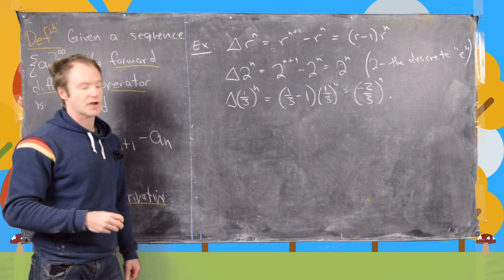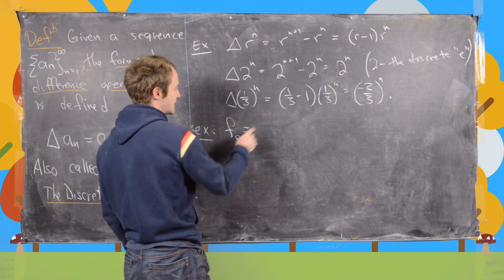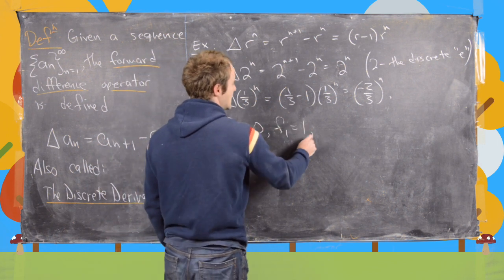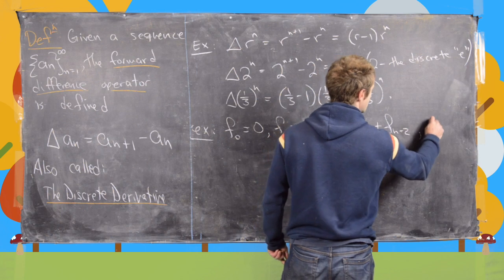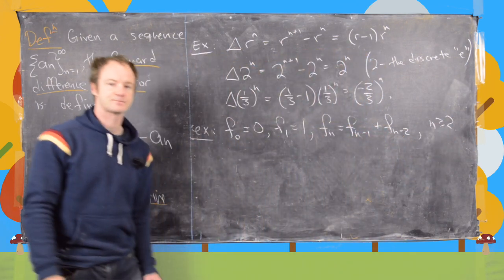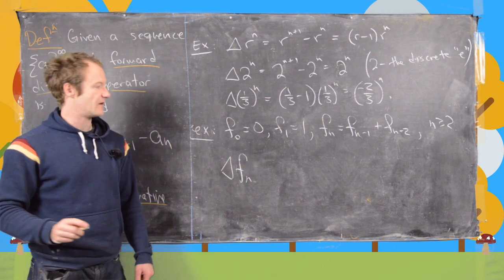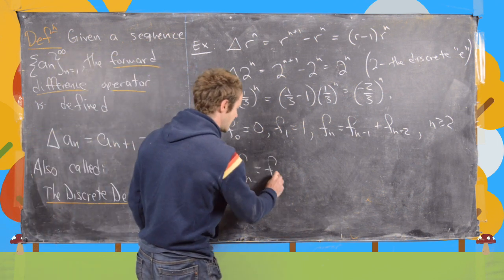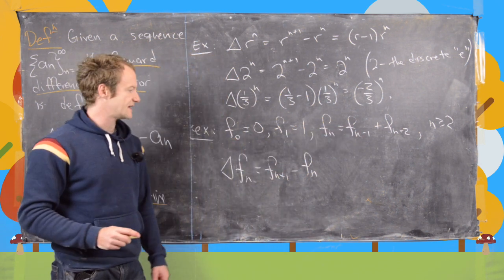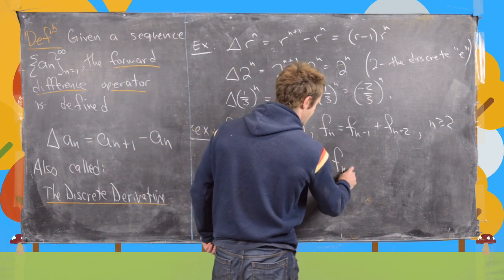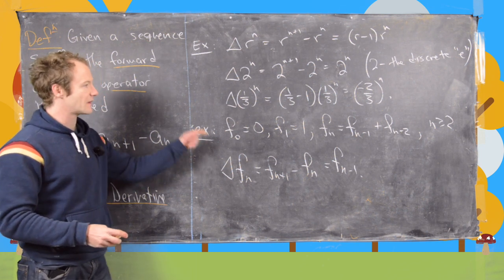Let's look at Fibonacci numbers. Recall: F_0 = 0, F_1 = 1, and F_n = F_{n-1} + F_{n-2} for n ≥ 2. The forward difference operator of F_n equals F_{n+1} minus F_n, and using the recursion re-indexed slightly, this equals F_{n-1}.